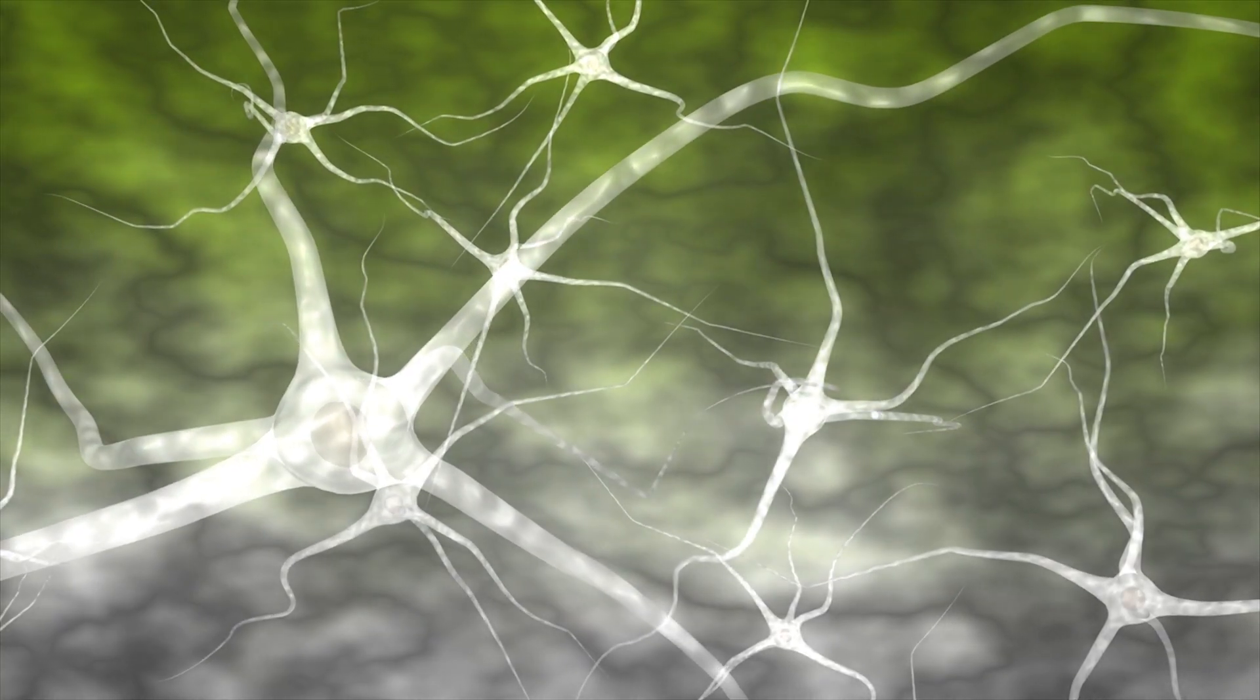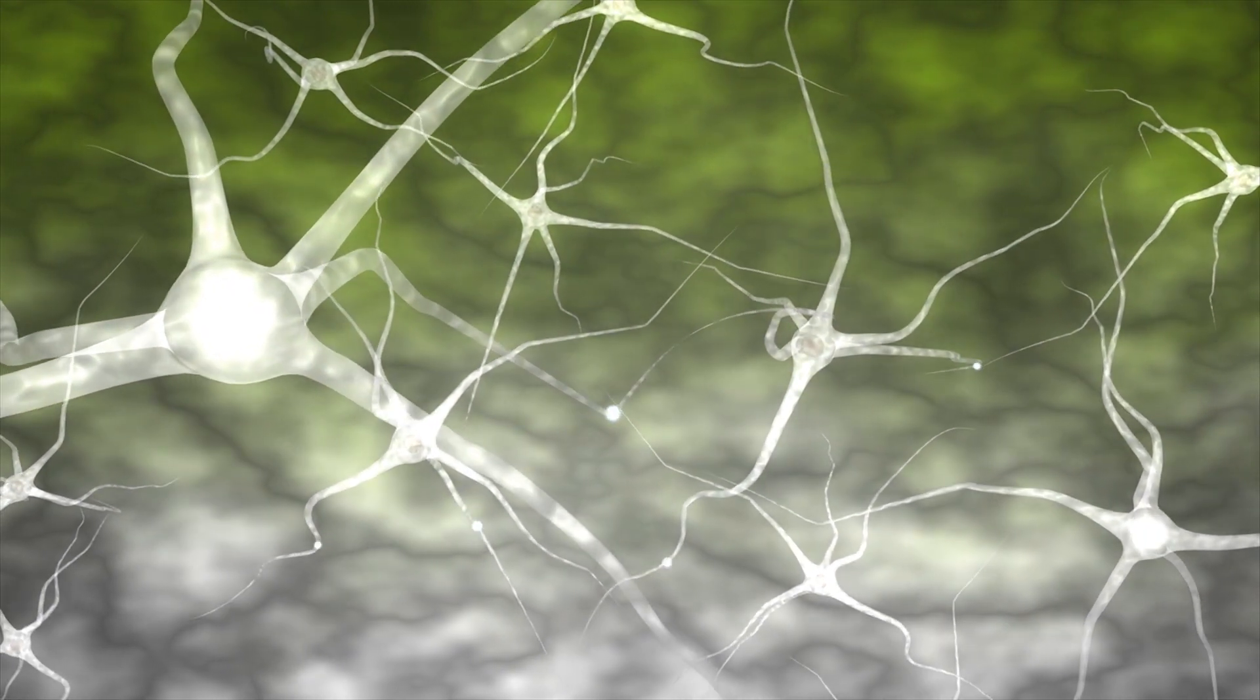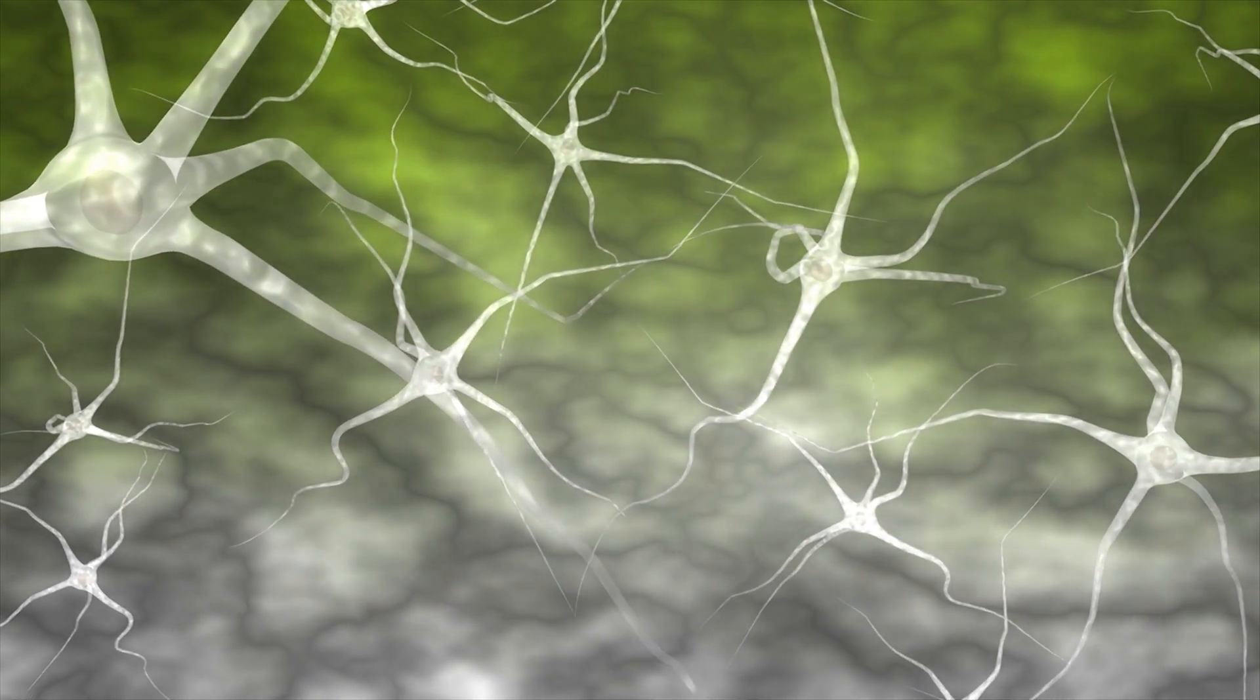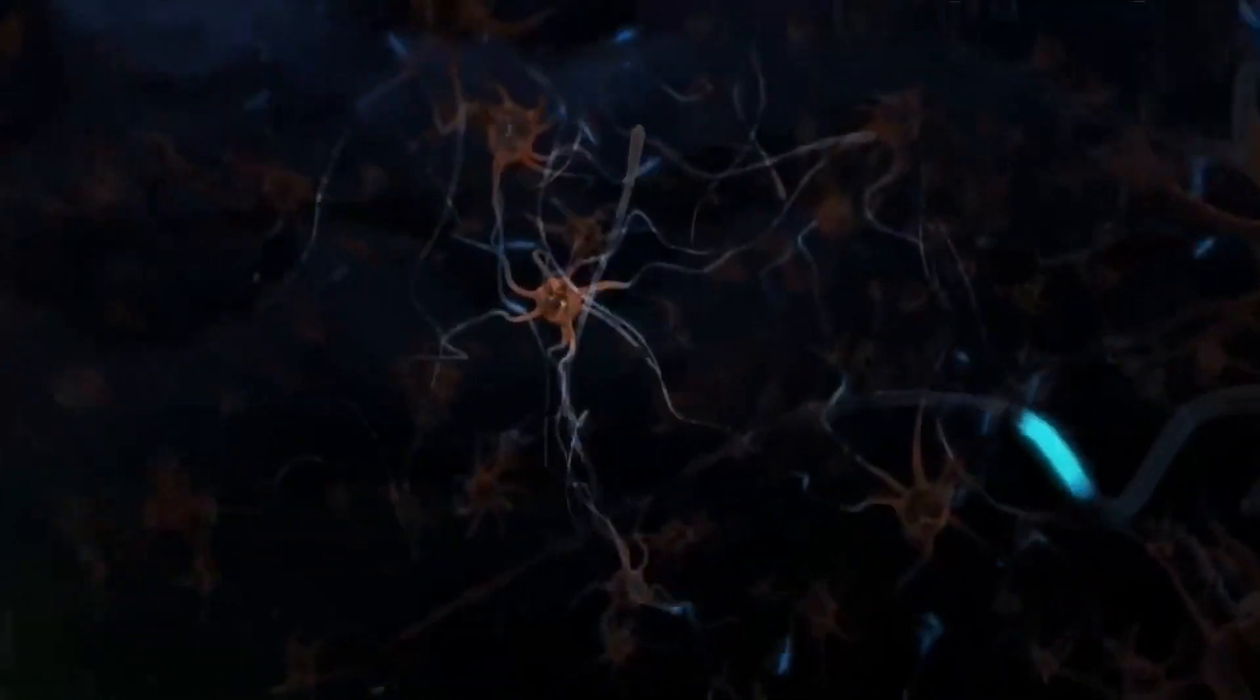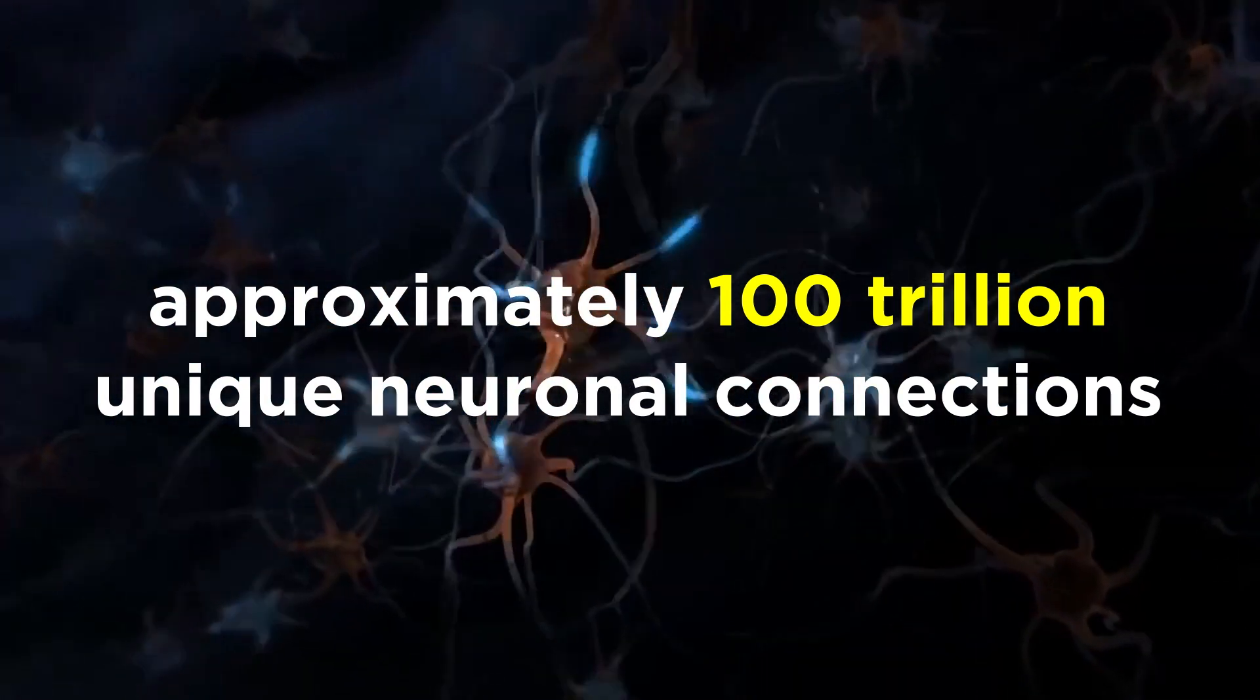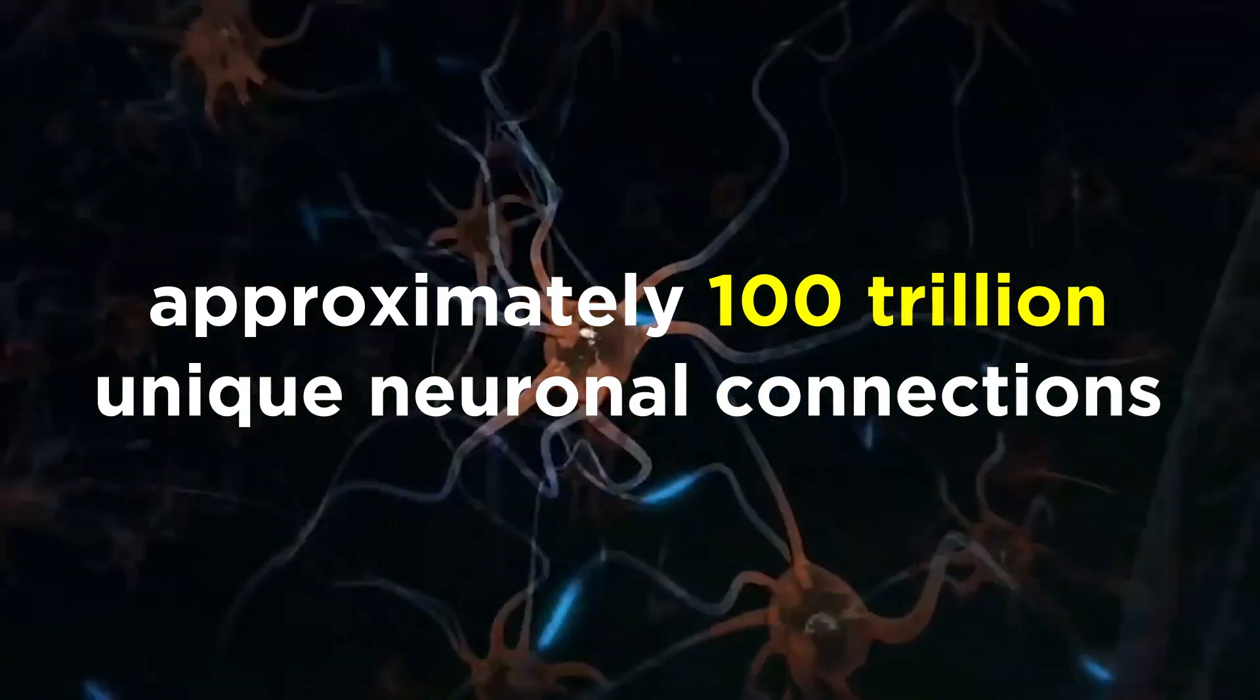As we may recall from our brief introduction to the brain in the anatomy and physiology series, the power of the brain lies in the staggering number of neuronal connections it possesses. It is the ability of each individual neuron to generate an electrical signal, coupled with the 100 trillion or so unique neuronal connections that gives the brain its immense computing power.